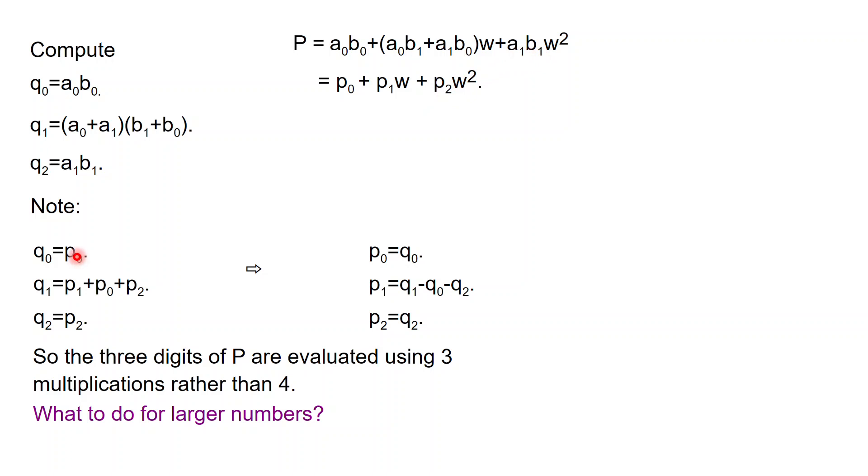And then we are going to compute Q2, which is A1 B1, which is equal to P2, the last multiplication that we need. Now we make the following critical observation: that P0 that we want is, as we said, Q0. The P2 that we want is, as we said, Q2. And the P1 that we want can be obtained as Q1 minus Q0 minus Q2. Brilliant! We are saving one multiplication at the cost of increasing number of additions. But that's good because addition is extremely cheap.